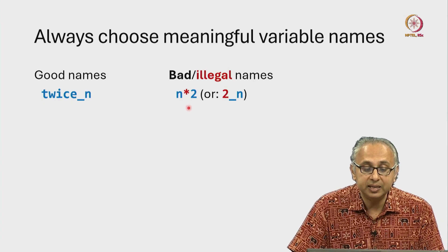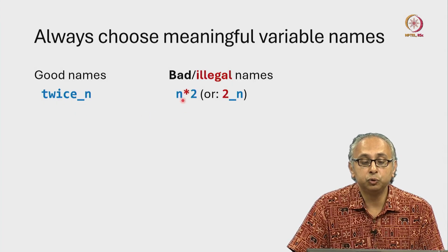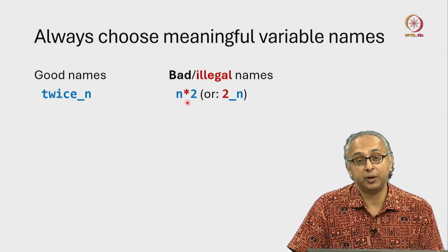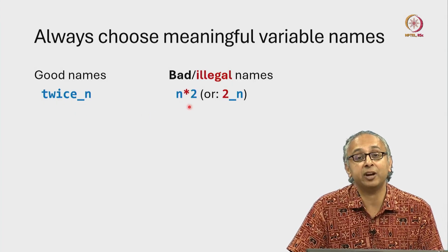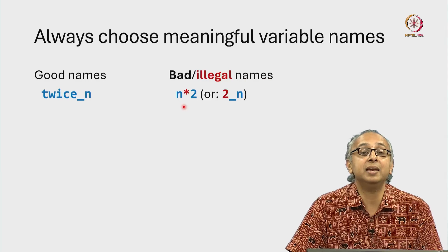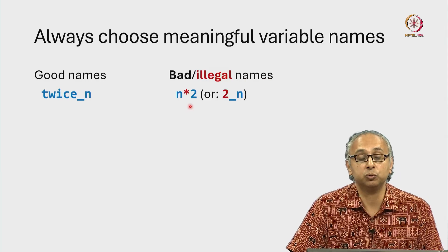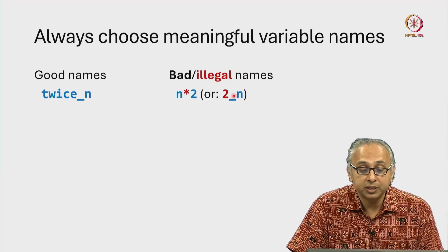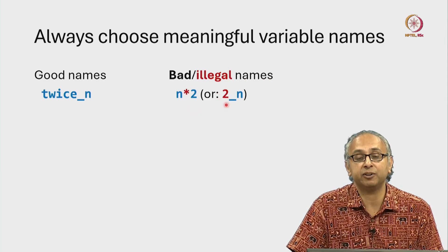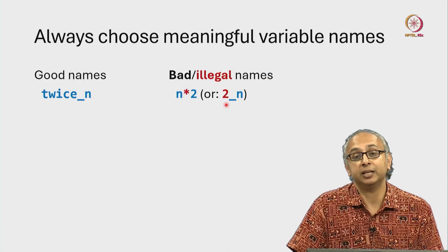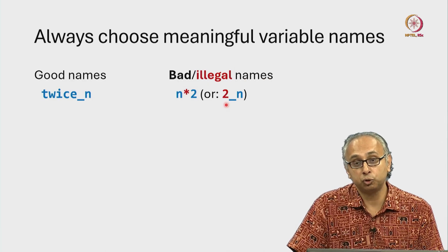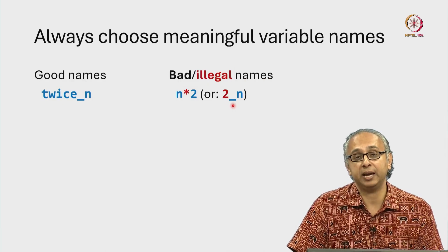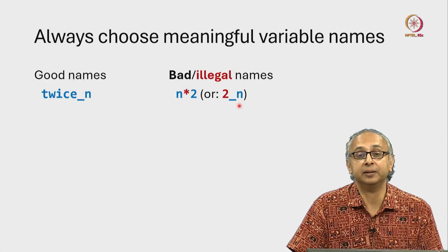It's illegal to use operators like star — I cannot have a variable named n times 2. Similarly, I cannot start the name of a Python variable with a digit, so 2_n is actually illegal.